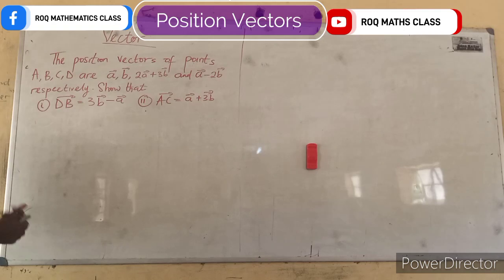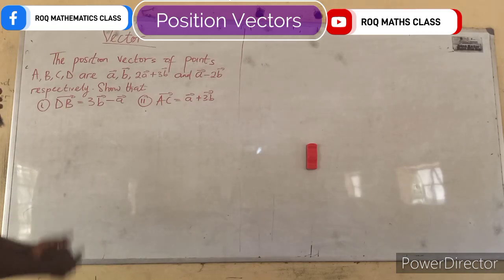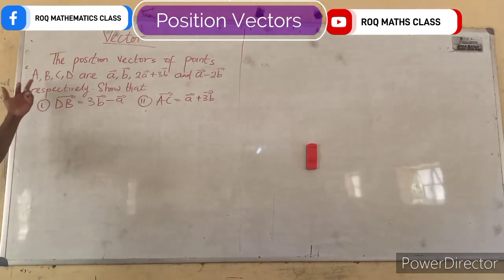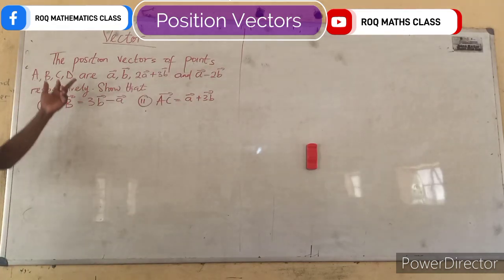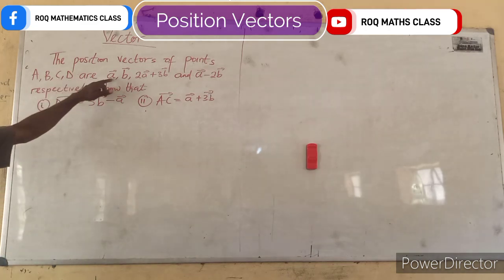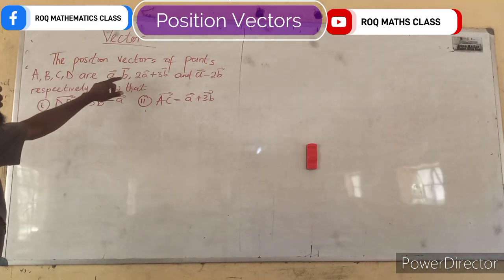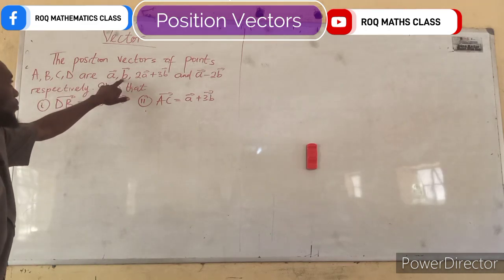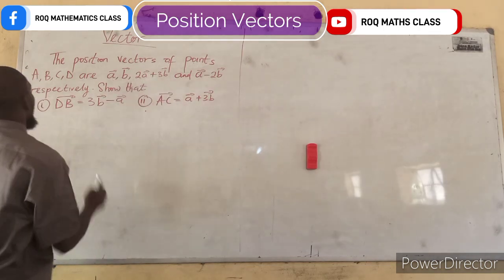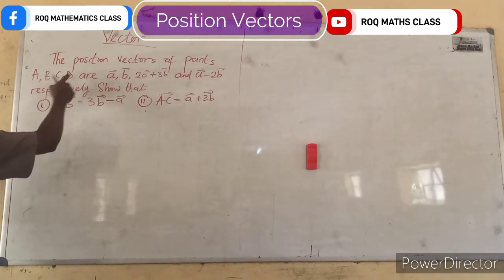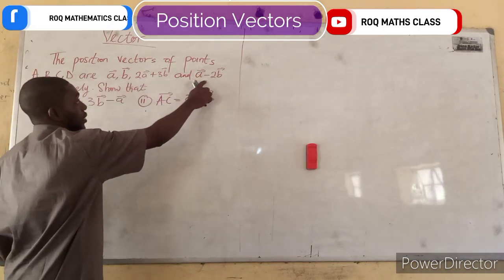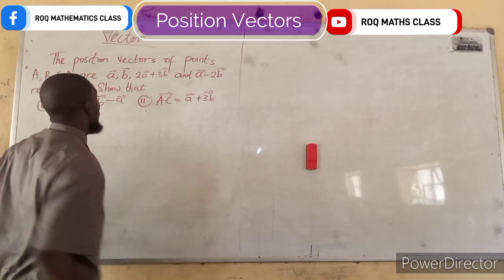Now we want to find the position vector of this point. We have point A, B, C, and D. For point A we have vector a, for B we have vector b, for C we have 2 vector a plus 3 vector b, and for D we have vector a minus 2 vector b.